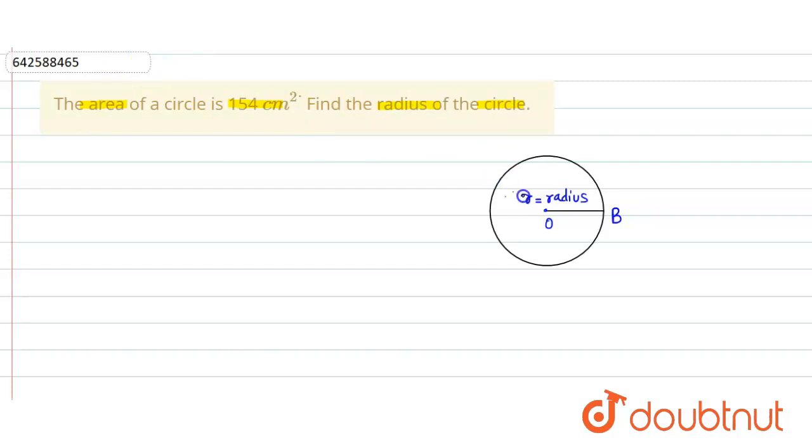So here, let the radius of this circle be r, and here the radius is this one which is O and then B. So let the radius of circle equal to r centimeters.